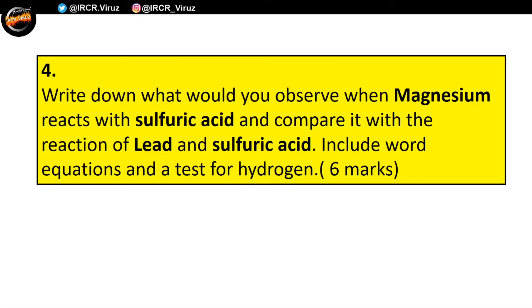Now, how do we know that the bubbles given off in this reaction are actually hydrogen? There's a very easy test to do. When you have a test tube, pour in your acid and your piece of metal, and as it starts to fizz and bubble, you put another test tube on top to gather the gases being formed. For hydrogen, if you get a splint with a naked flame on it and put it in, it makes a very loud squeaky popping sound.